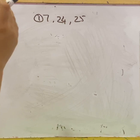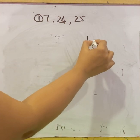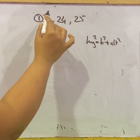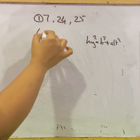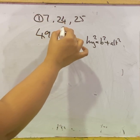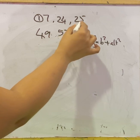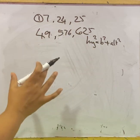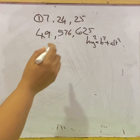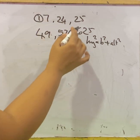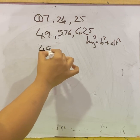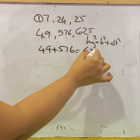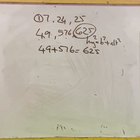Let us check their squares. According to Pythagoras theorem, hypotenuse square equals base square plus altitude square. So: 7² = 49, 24² = 576, and 25² = 625. Now check: take the smaller numbers and add them to see whether you get the greatest number. 49 + 576 = 625.